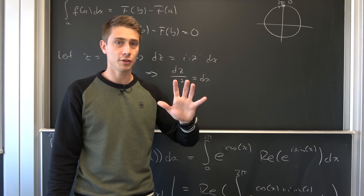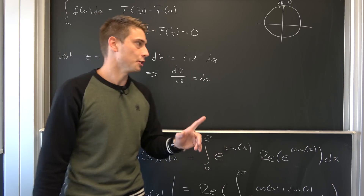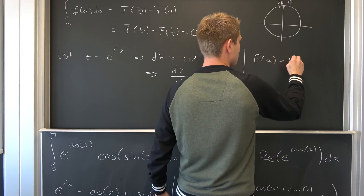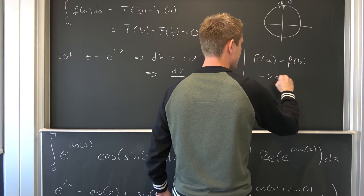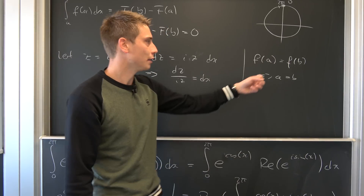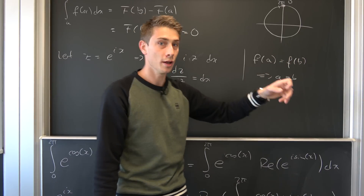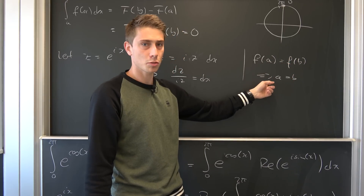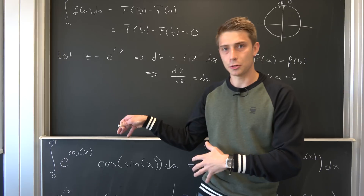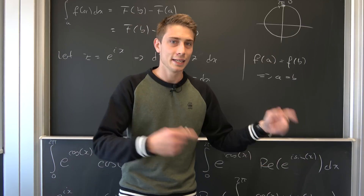In my opinion, this has to do with the fact that the substitution isn't bijective — specifically not injective. Injective means if f(a) equals f(b), then a equals b. But the complex exponential evaluated at two pi equals the complex exponential evaluated at zero, yet zero does not equal two pi. So the substitution is not injective, which is why this approach doesn't work.